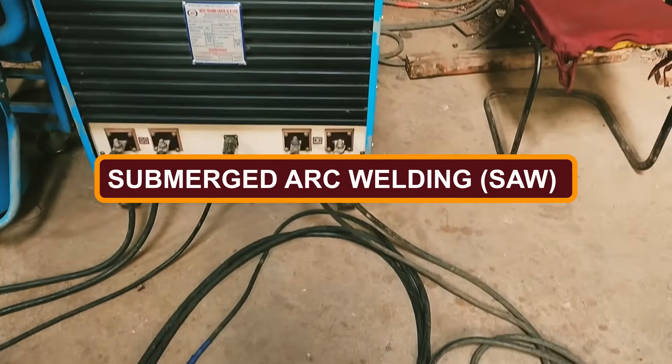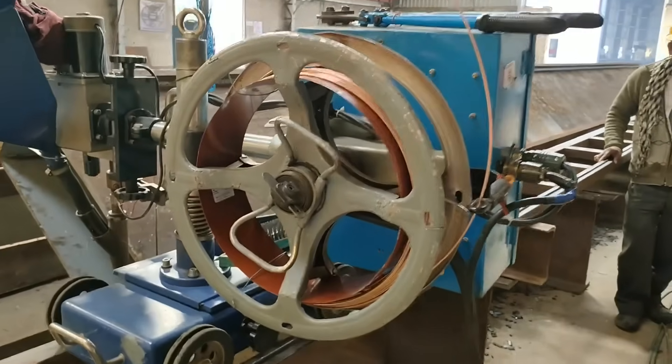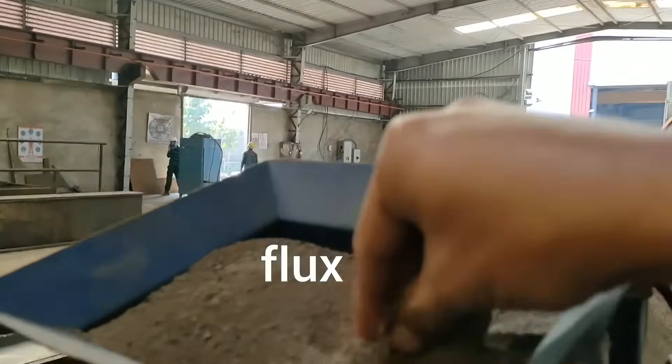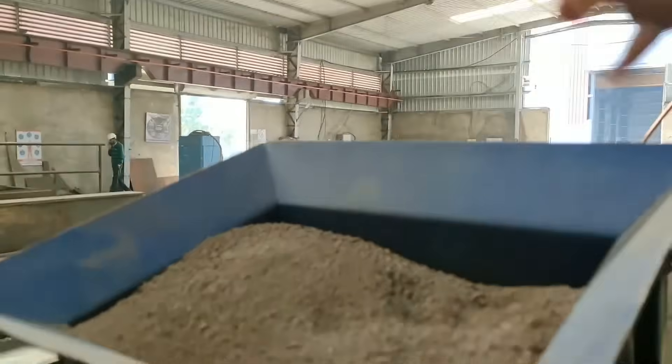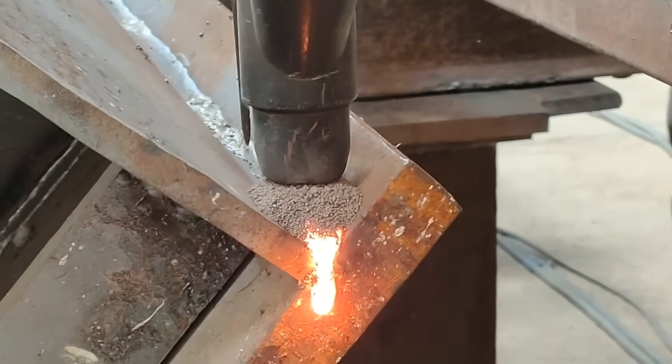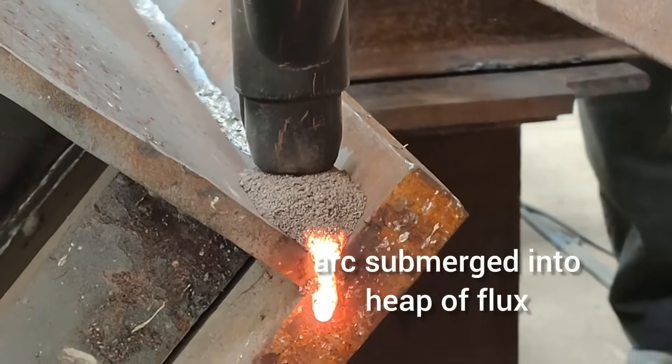Submerged Arc Welding (SAW) is a frequently used process with a continuously fed consumable electrode and a blanket of fusible flux which becomes conductive when molten, providing a current path between the part and the electrode. The flux also helps prevent spatter and sparks while suppressing fumes and ultraviolet radiation.